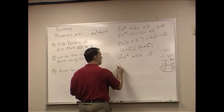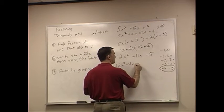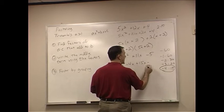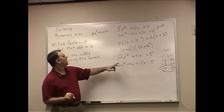That's how I'm going to write my middle terms. 12x squared minus 4x plus 15x minus 5.